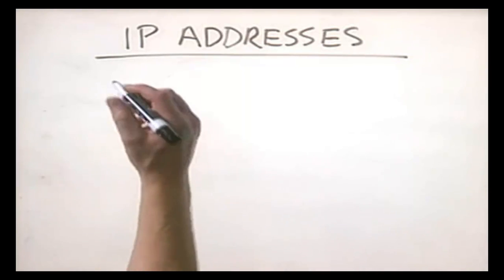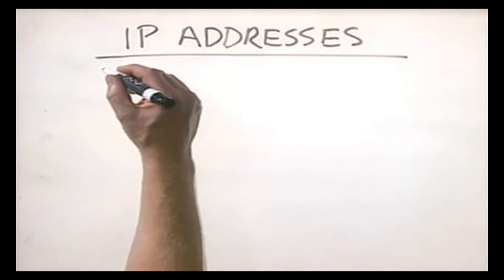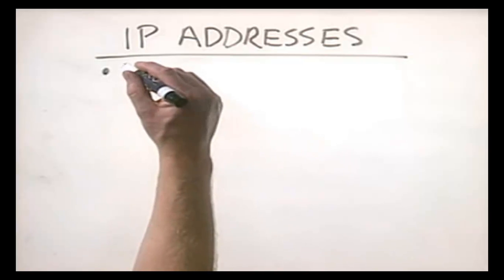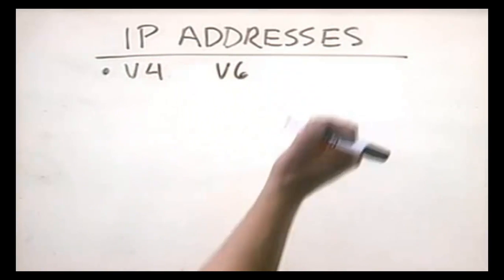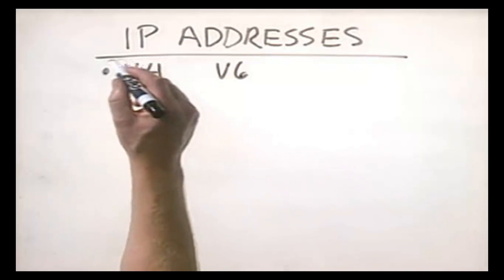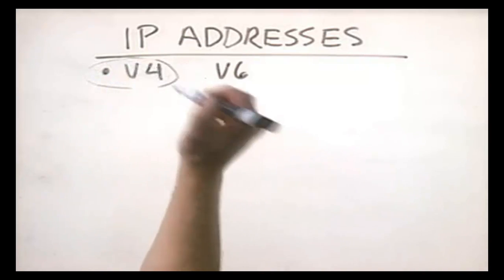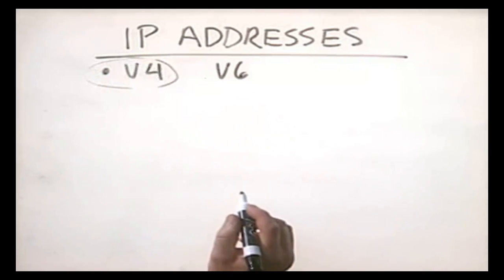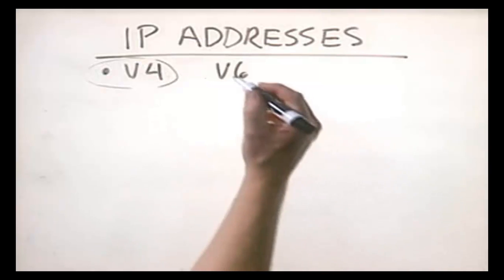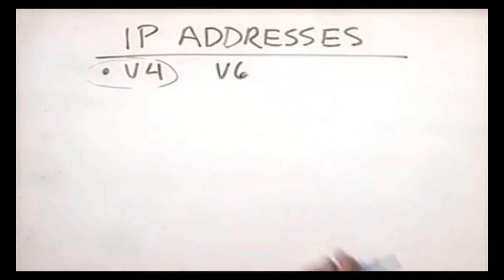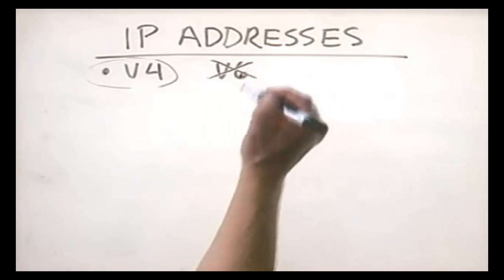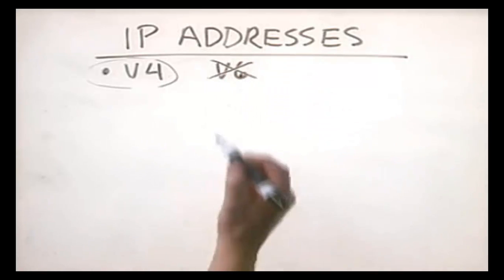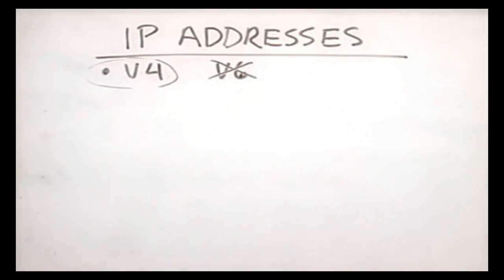Before we get going, you need to understand that there are actually two different versions of IP addresses. There's version 4 and version 6. Version 4 is what is currently in use by most organizations today, and it's what's used on the Internet. V6 has been proposed and it's been around for a long time, but it hasn't been widely deployed yet. For now, what we're going to be dealing with is version 4 IP addresses.